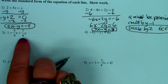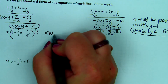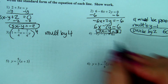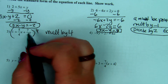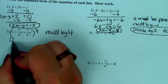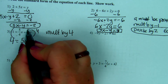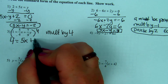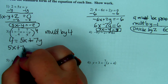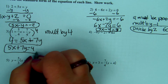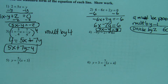Here we have a fraction, so we're going to multiply by 4 — multiply each of the three terms by 4 — to get rid of the fraction. 1 times 4 is 4; for the x term the 4s cancel and we get 5x; for the y term the 4s cancel and we get 7y. Then we rearrange and put it on the other side so it looks like the standard form Ax plus By equals C.